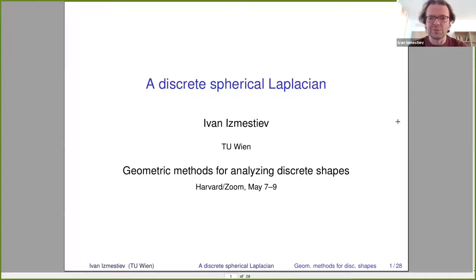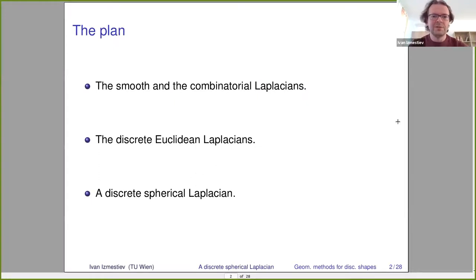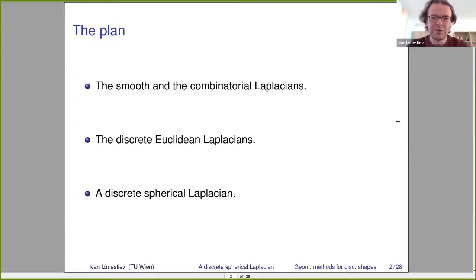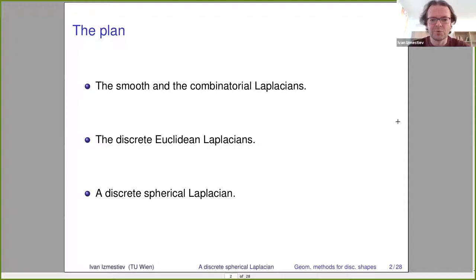I will speak about discrete spherical Laplacians and the plan is as follows. First, I will remind you about the smooth Laplacian, the classical one, and the combinatorial Laplacian. Then I move to geometry and give a review of discrete Euclidean Laplacians, where you will meet the cotangent Laplacian. In the last part, I will introduce a discrete spherical Laplacian and explain why we may need it in its discrete version.